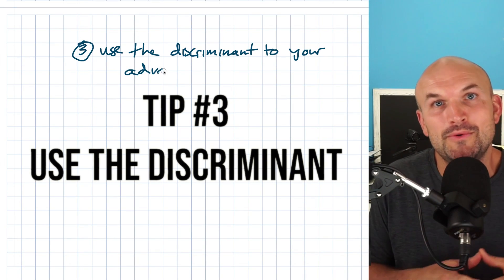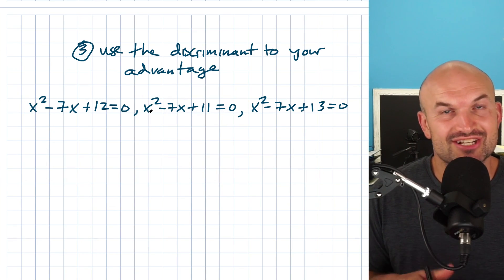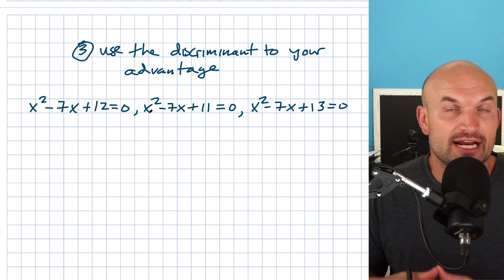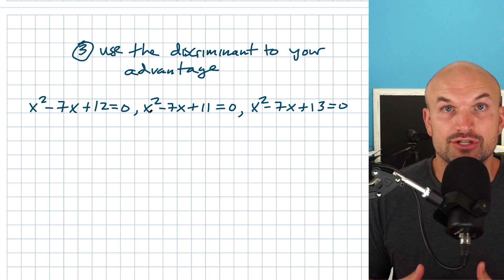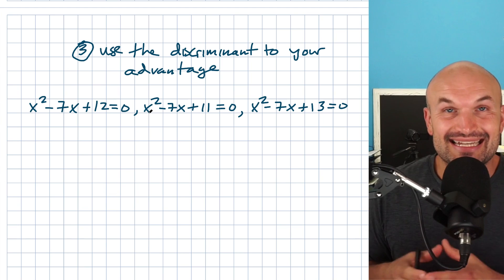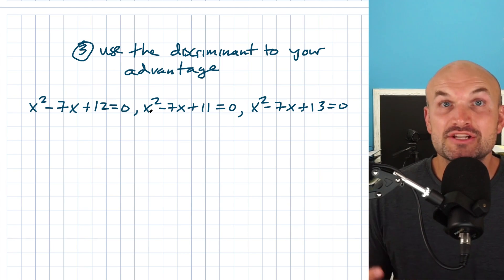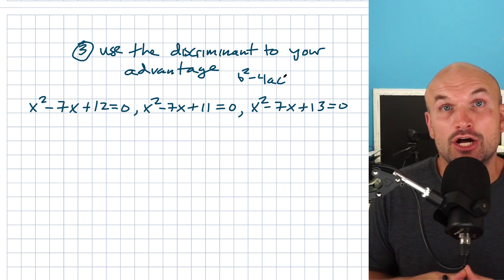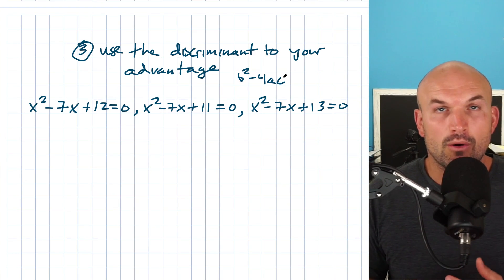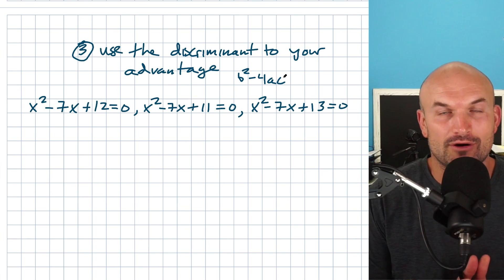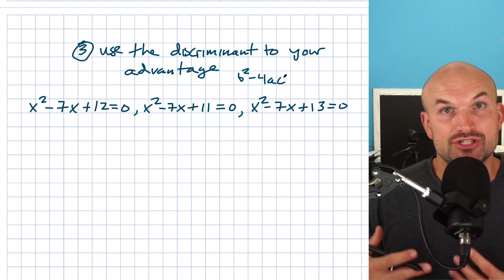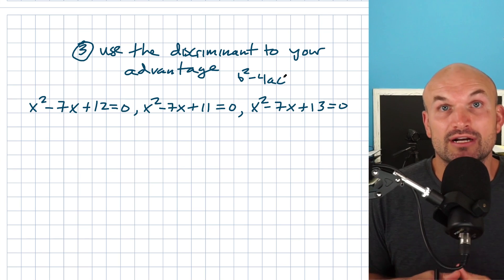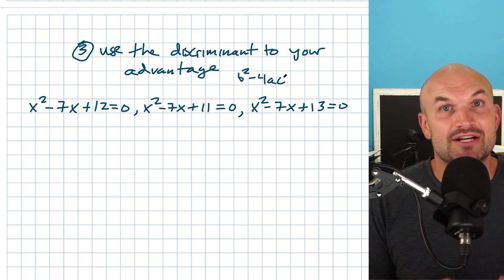Tip number three is to use the discriminant to your advantage. In these three examples, they're very similar but a little different, and that small difference makes a huge difference in the type of solutions you'll find. A quadratic equation can have one, two, or no real solutions. The quickest way to determine that is to calculate the discriminant, which is B squared minus 4 times A times C — what's under the square root in the quadratic formula. Use it to understand your solutions, verify your work, or know whether something is factorable over rational numbers.